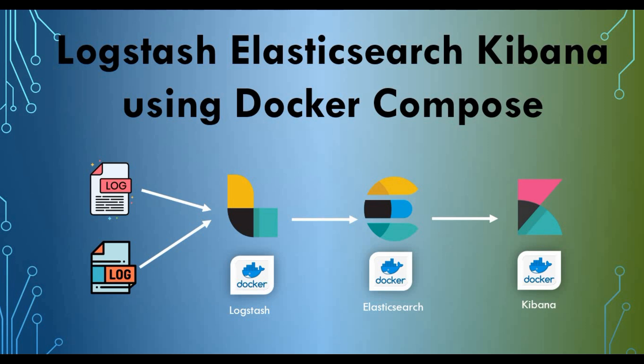All of this we are going to achieve using a Docker Compose file, where we'll be writing services for Logstash, Elasticsearch, and Kibana. We'll also be creating volumes to map config files for Logstash so that when we run the Docker Compose file, all these config files will be used, the containers will be running, and the data will be available in Kibana.